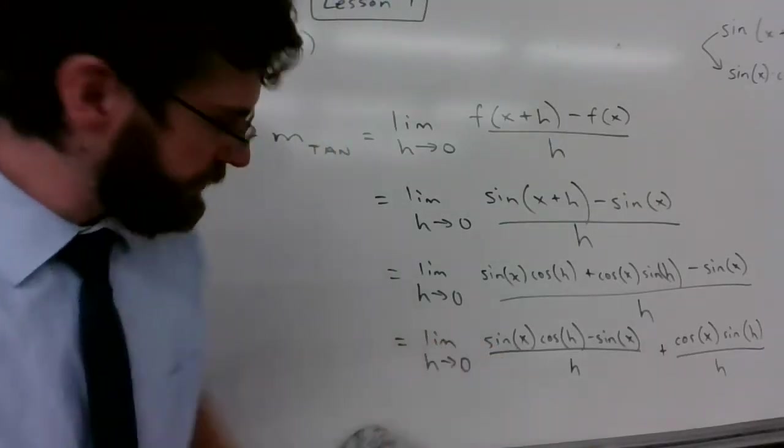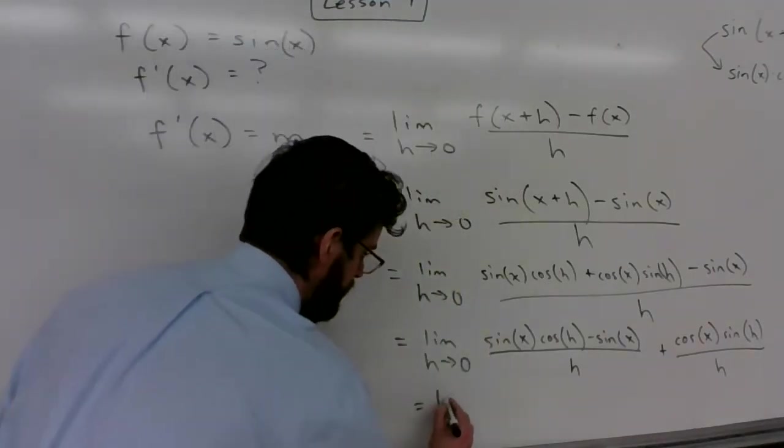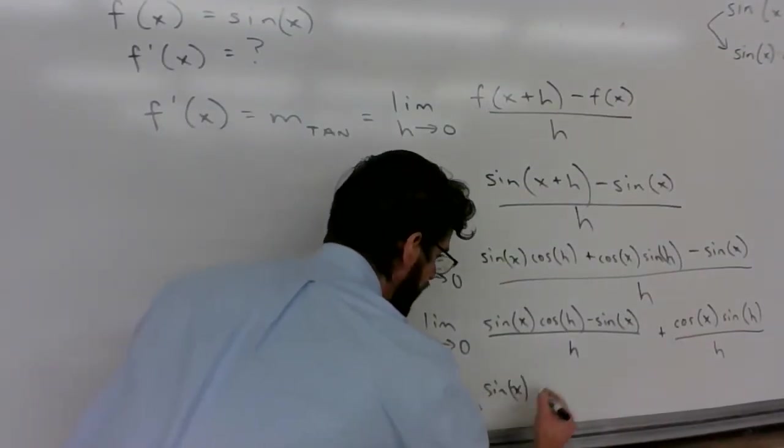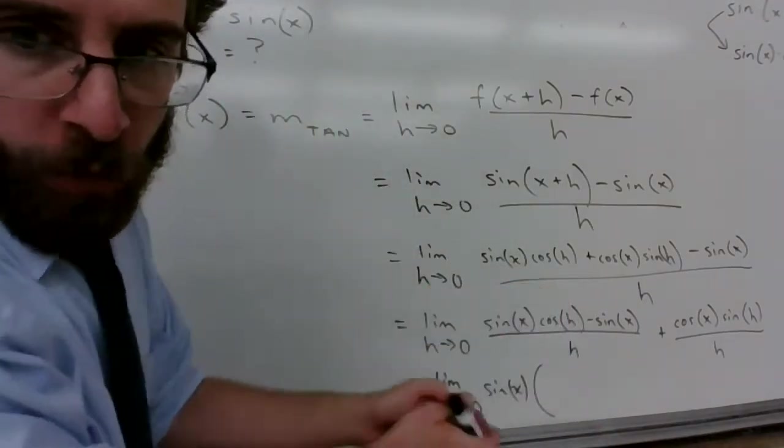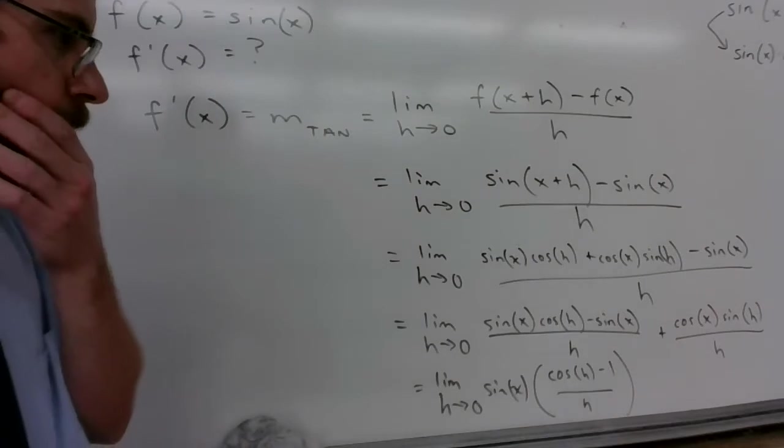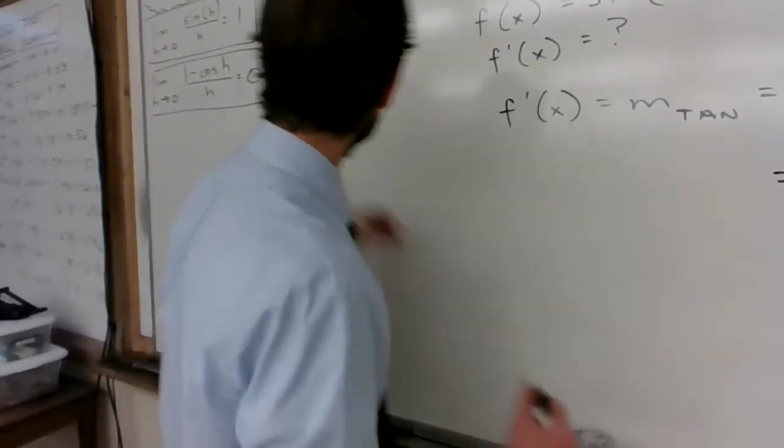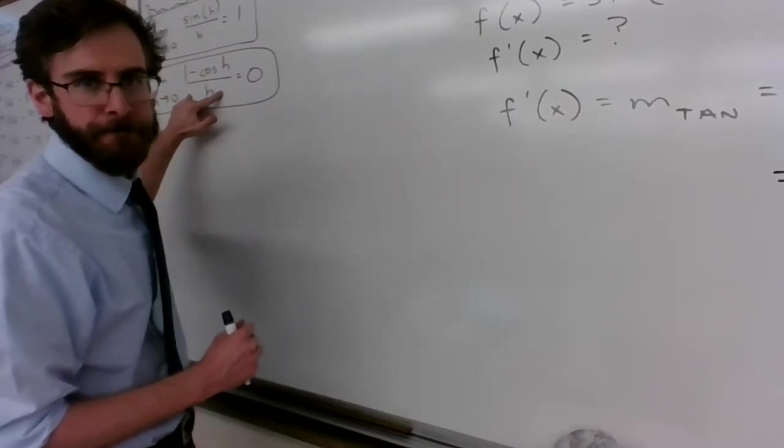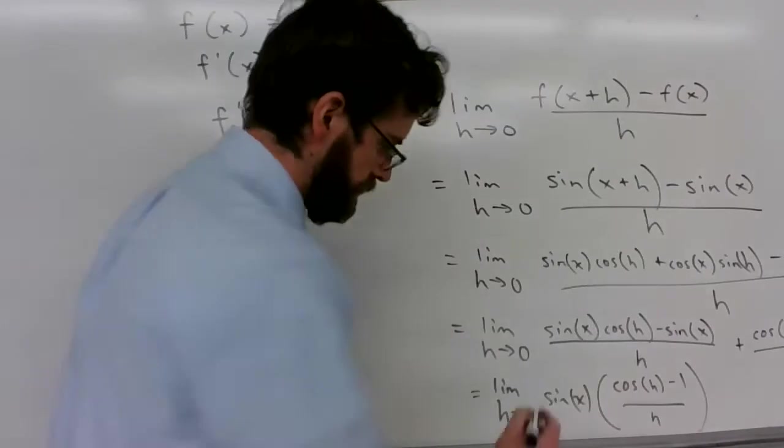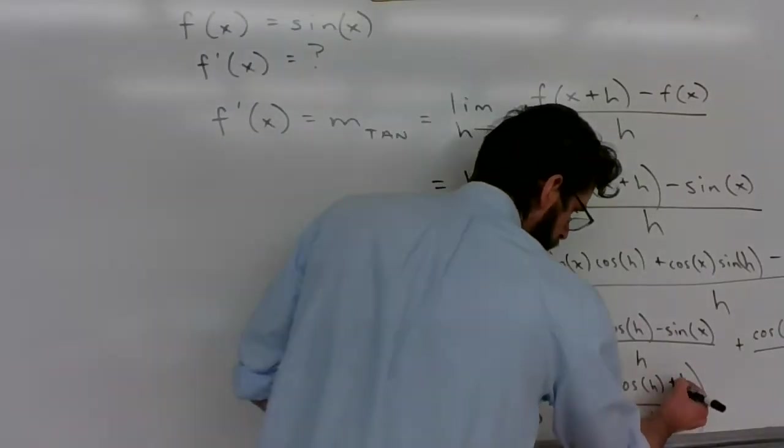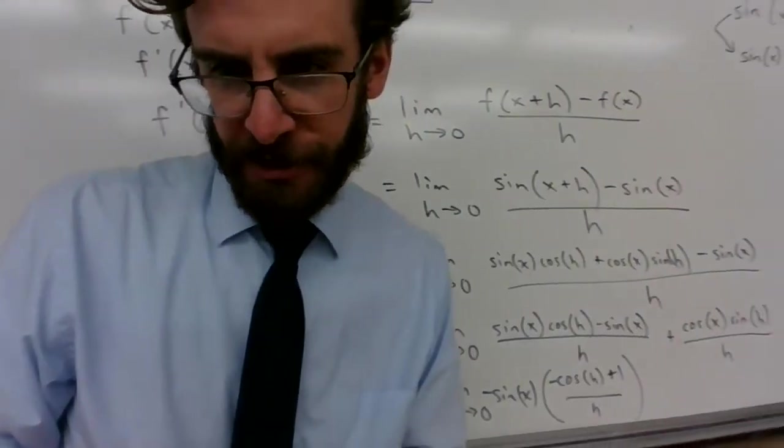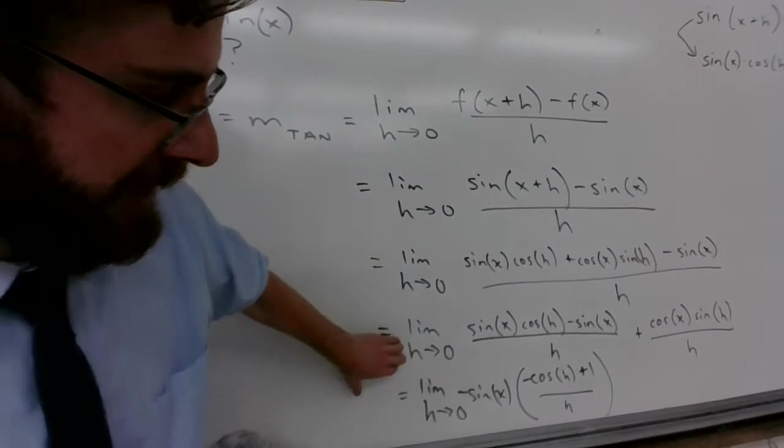So now I can factor out a sine of x. So this is the limit as h approaches zero of sine of x times cosine of h minus 1 over h. It's almost identical to this. We can make it identical. Take out a negative. Now we can apply the theorem to that right there. But maybe I'm jumping ahead of myself. Maybe I should look over here before we do that.